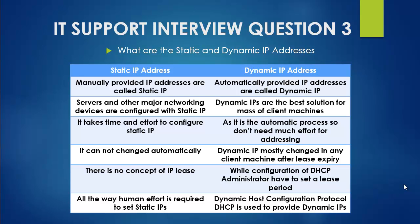If a machine is not set to take an IP from DHCP, you need to enable that. Static IP addresses cannot change automatically, but dynamic IP addresses mostly change after a certain lease expiry. In DHCP there's a concept of a lease — it might be two, three, or seven days. After that lease expires, the dynamic IP changes; that IP may go to another machine and your machine receives a new IP.